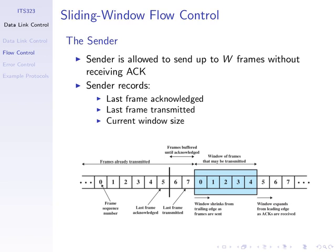For the protocol to work, the sender keeps track of some values: the last frame that was acknowledged, the last frame that has been transmitted, and the current window size. The diagram shows numbers 0 through 7 representing frames with their sequence numbers. At some point in time, the last frame transmitted had sequence number 7, and the last frame acknowledged had sequence number 5.